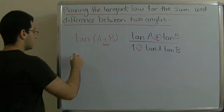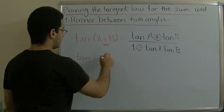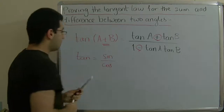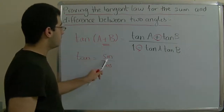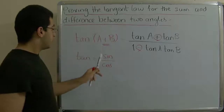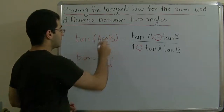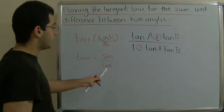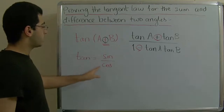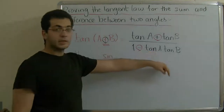That is because the tangent equals sine over cosine. In the sine law for the sum and difference of two angles, the sign between the two angles does not change, while in the cosine law it changes. For the proof of the sine and cosine laws, click on the links here.